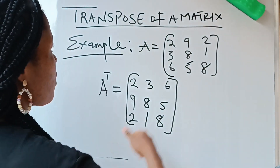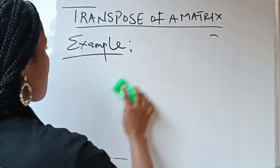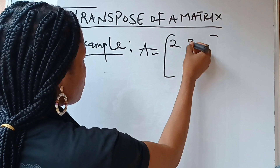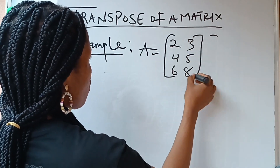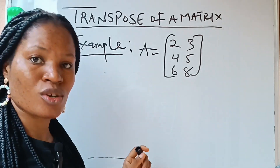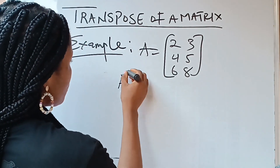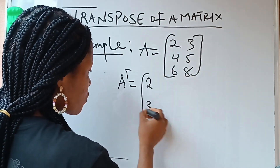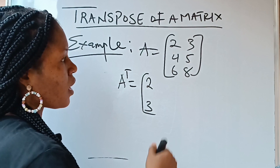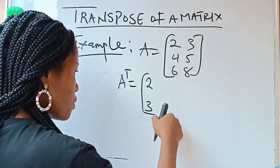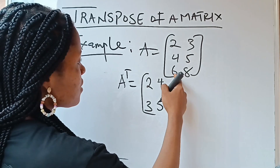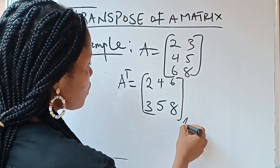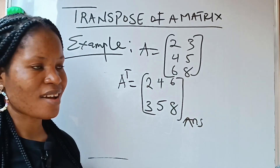Let's do another example. If you have A equal to [2, 3; 4, 5; 6, 8], to find A transpose: this 2, 3 is your first row — turn it to your first column vertically. This 4, 5 is your second row — turn it to your second column vertically. This 6, 8 is your third row — turn it to your third column vertically. This becomes your answer. It's very easy.